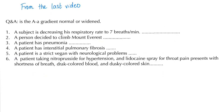First, let me answer the questions from the last video. Number one: a subject is decreasing his respiratory rate to seven breaths per minute. What is the AA gradient — is it normal or widened? Is the problem here in the lung? No, it could be in the brainstem. So the answer here is normal.